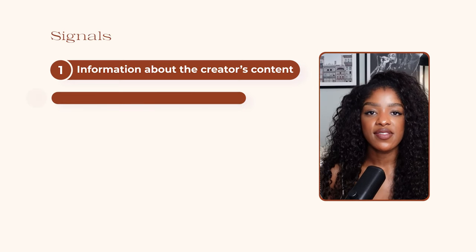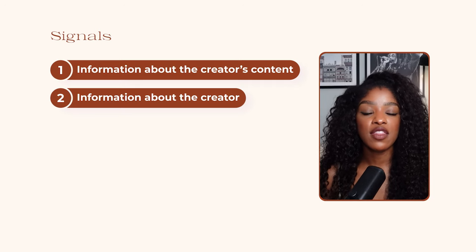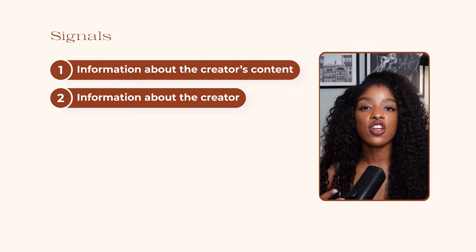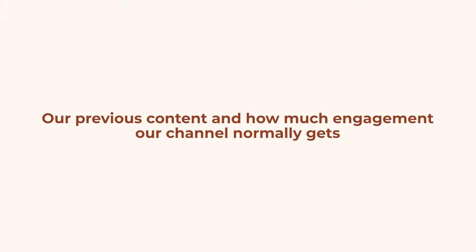The second signal it looks at is information about the creator — you, me, the person who just shared that post. It's mainly looking at our previous content and how much engagement our channel normally gets. This is where consistency comes in handy because if we are creating content and sharing it consistently, then there's loads of proof to the algorithm that people like our content and engage with our stuff quite frequently.